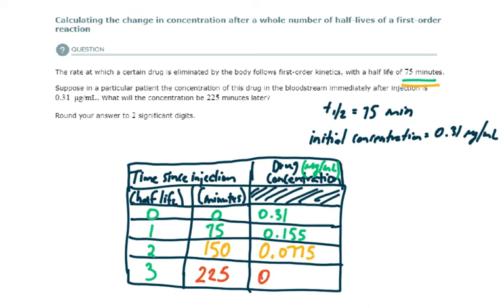0.03875 micrograms per milliliter. That is the concentration at the third half-life. So 225 minutes later is at the third half-life. So the concentration would be this concentration.